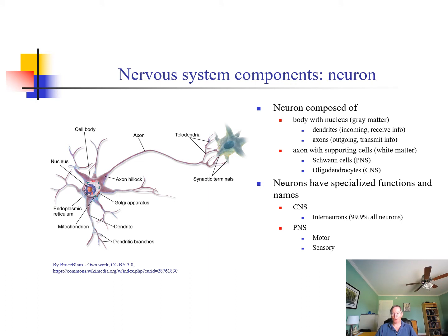The basic functional unit of the nervous system is the neuron, and neurons come in lots of different types. A typical neuron will have a body composed of a nucleus, which is sometimes called gray matter, as well as dendrites, which receive information, and axons, which transmit outgoing information to other places — either other neurons or to affected places such as muscles.